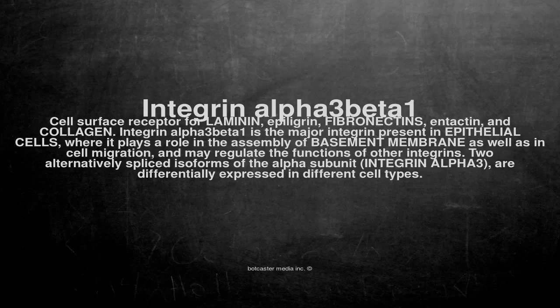Integrin alpha3beta1 is the major integrin present in epithelial cells, where it plays a role in the assembly of basement membrane, as well as in cell migration, and may regulate the functions of other integrins. Two alternatively spliced isoforms of the alpha subunit,